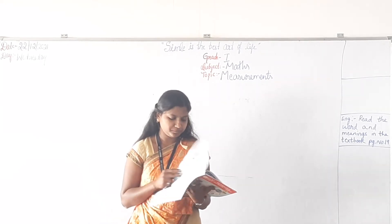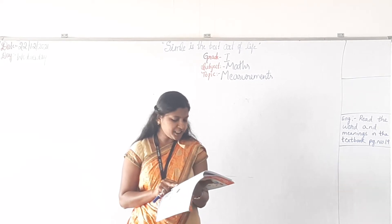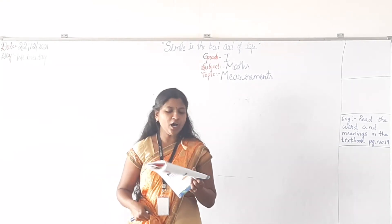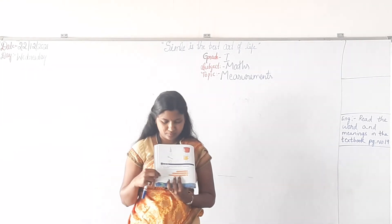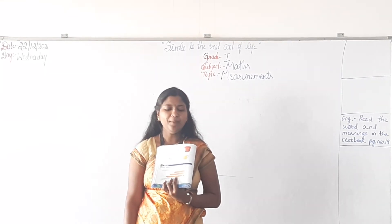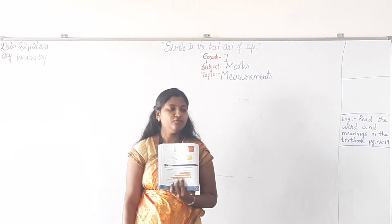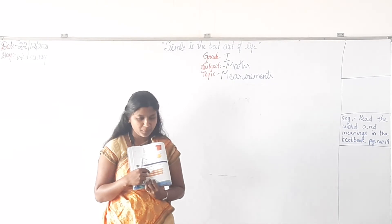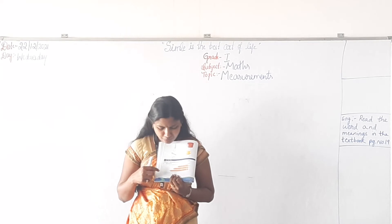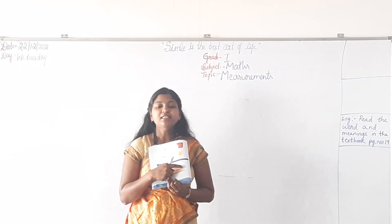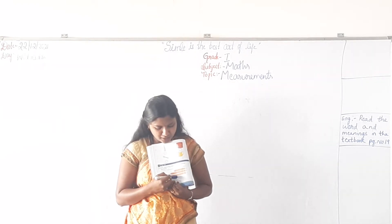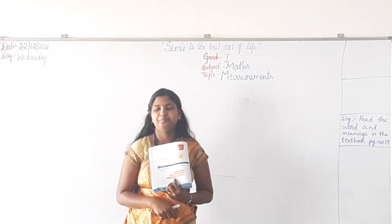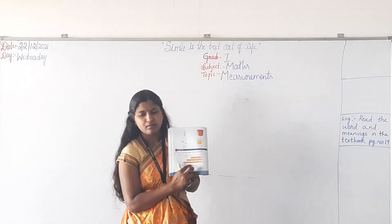Open page number 46. See the first question — long and short. Can you see three pencils? Now see the question. A: which pencil is the longest? C. So write C there beside the question.